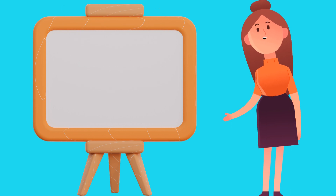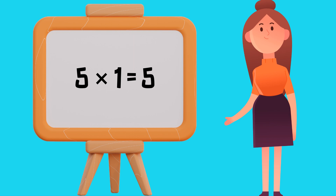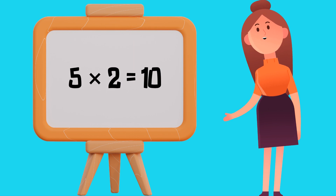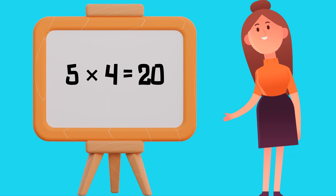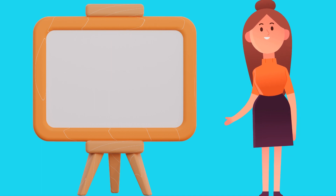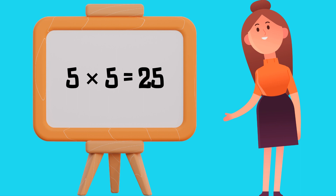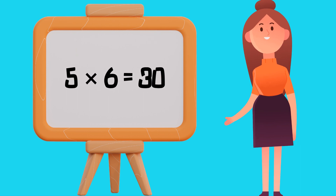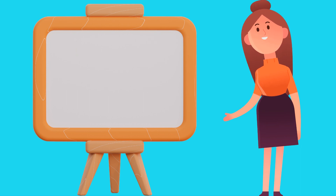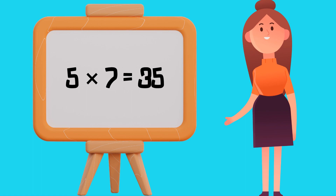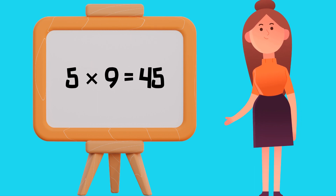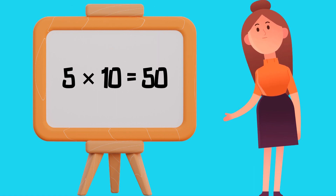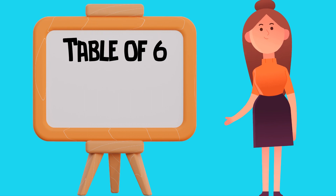Table of 5: 5 1's are 5, 5 2's are 10, 5 3's are 15, 5 4's are 20, 5 5's are 25, 5 6's are 30, 5 7's are 35, 5 8's are 40, 5 9's are 45, 5 10's are 50.